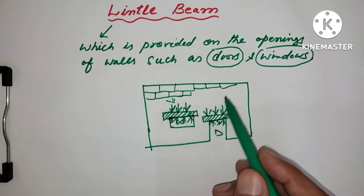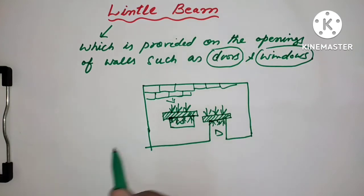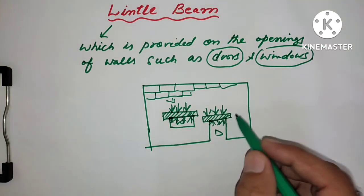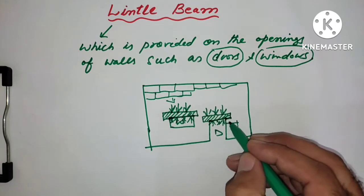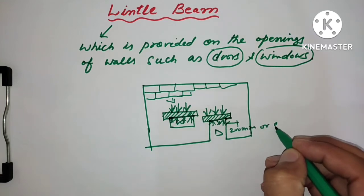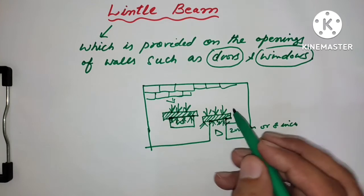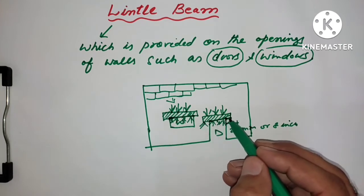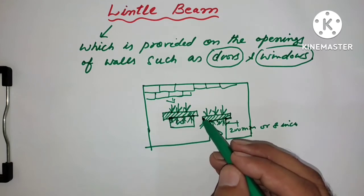This lintel is provided from the door opening minimum 200 mm or 8 inches on both sides. This is called bearing. We have to provide bearing on both sides of door and windows to hold the lintel.